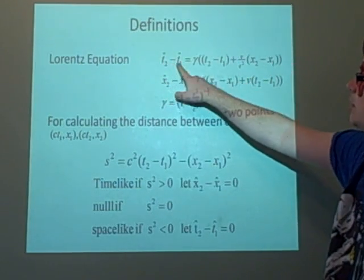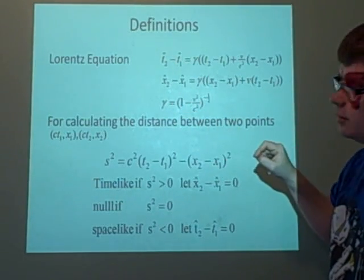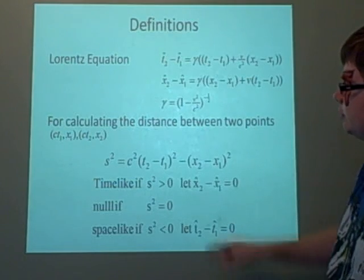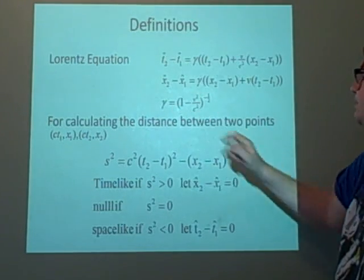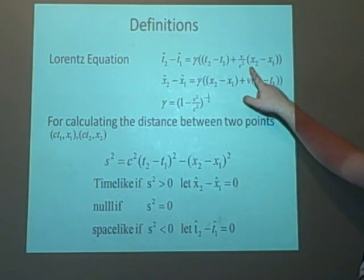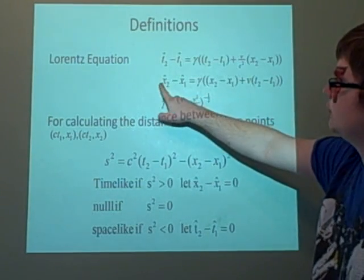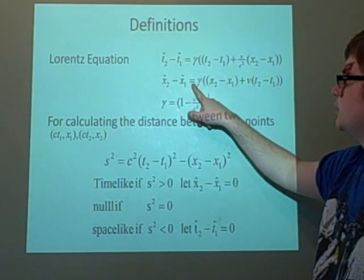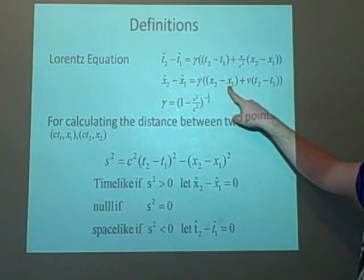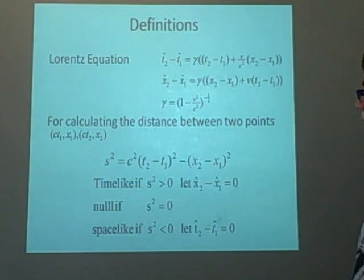t₂-hat minus t₁-hat equals gamma times (t₂ - t₁) plus v/c² times (x₂ - x₁), where gamma is (1 - v²/c²)^(-1/2). The x coordinates are related similarly: x₂-hat minus x₁-hat equals gamma times [(x₂ - x₁) plus v times (t₂ - t₁)].